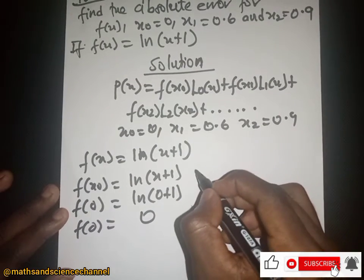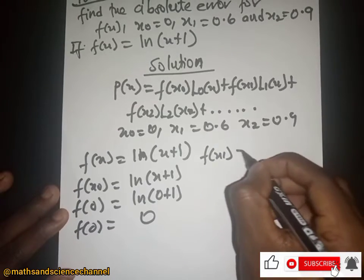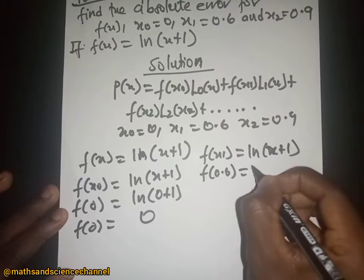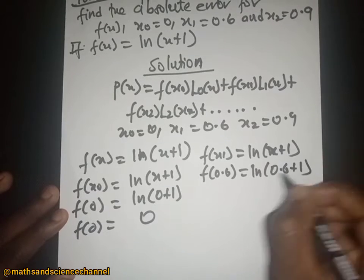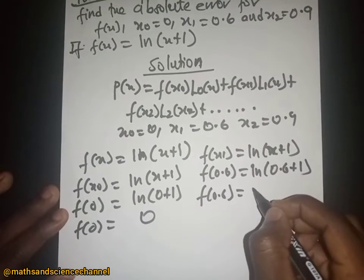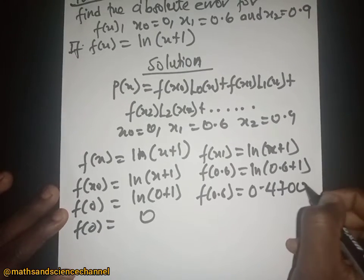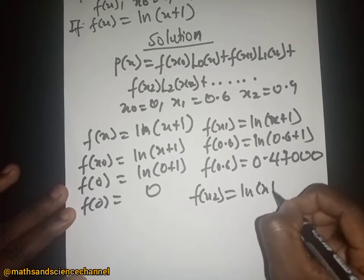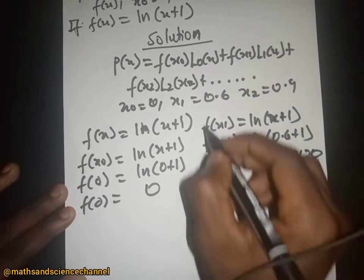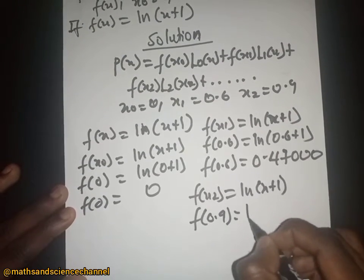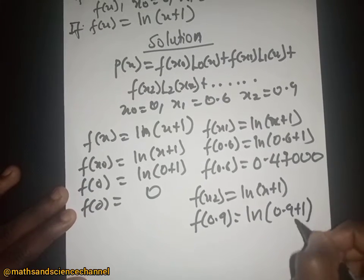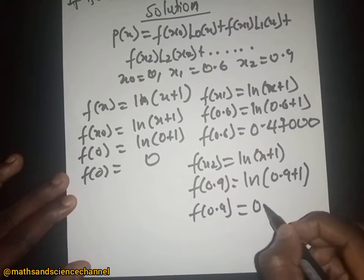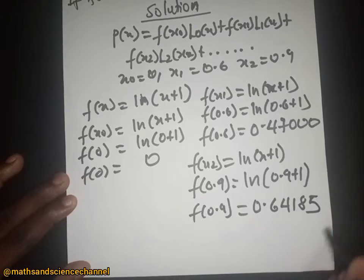For f(s₁), substituting s₁ = 0.6 gives ln(0.6+1) = ln(1.6) = 0.47000. For f(s₂), substituting s₂ = 0.9 gives ln(0.9+1) = ln(1.9) = 0.64185.